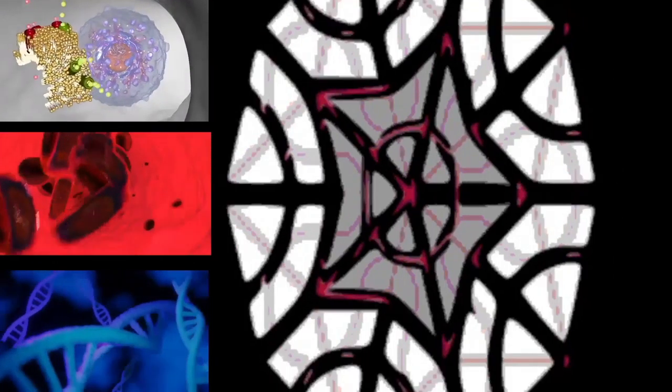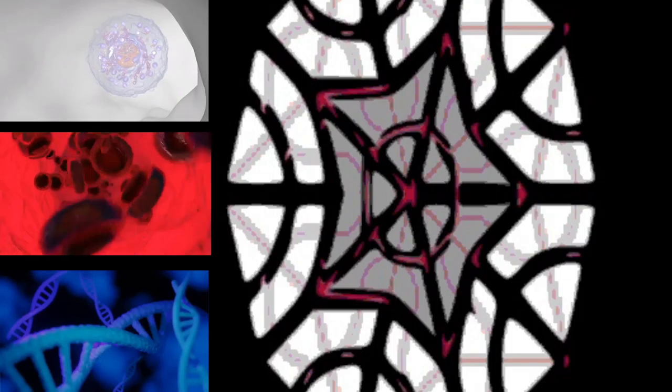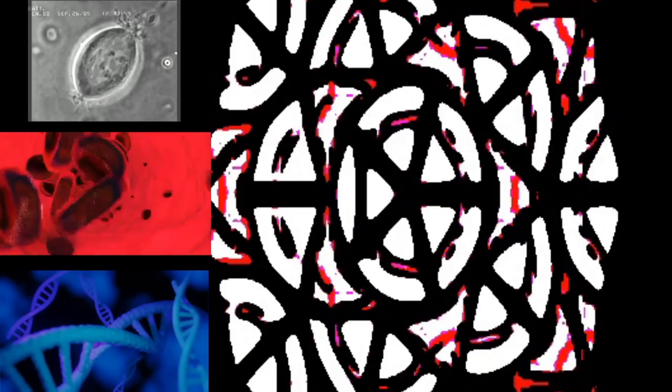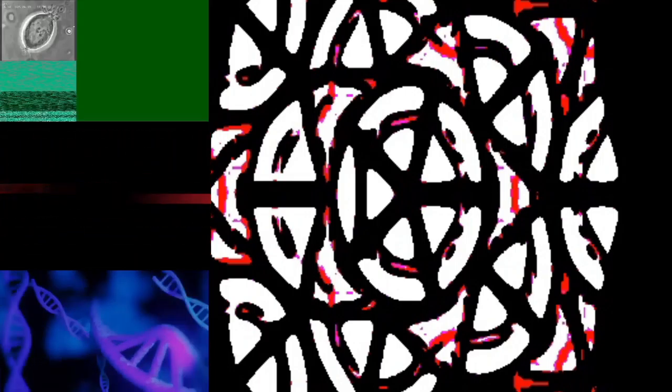Moreover, researchers have found that if rounding is heavily suppressed it may result in spindle defects, primarily pole-splitting and failure to efficiently capture chromosomes. Therefore, mitotic cell rounding is thought to play a protective role in ensuring accurate mitosis.